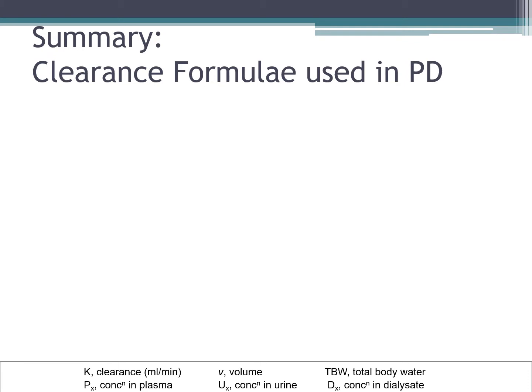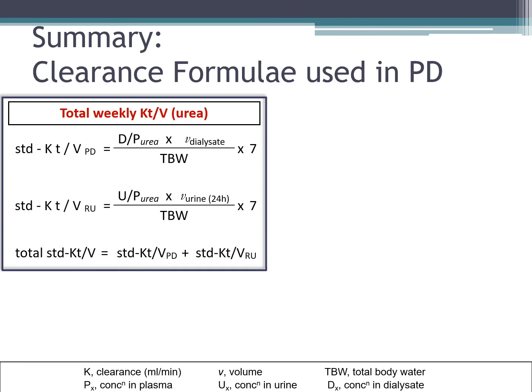So in summary, these are the clearance formulae that we use in peritoneal dialysis. For the total weekly Kt over V urea, we have the standardized Kt over V for PD, which we have derived in the earlier slides. If we collect a 24-hour urine collection, we can calculate the residual renal function, and if you add it all together, you get the total standardized Kt over V for the week.